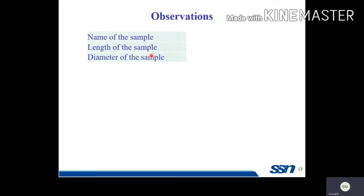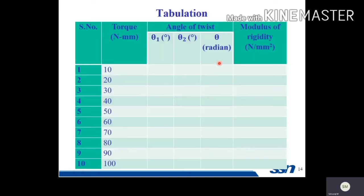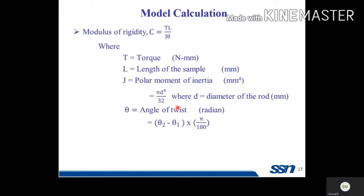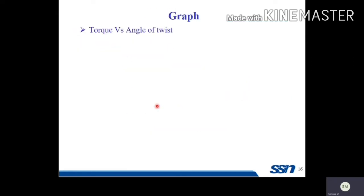For observations, record the name of the sample (steel rod), the length of the sample, and the diameter of the sample. In the tabulation, you will get 10 readings from 10 to 100 Newton meters. Enter theta one and theta two in degrees, then compute theta in radians using theta two minus theta one multiplied by pi by 180. From this, calculate the modulus of rigidity.